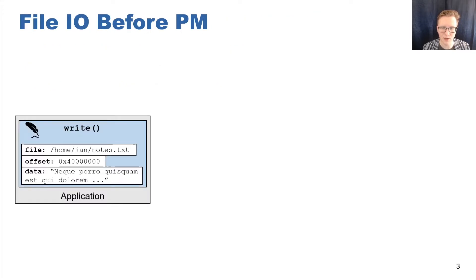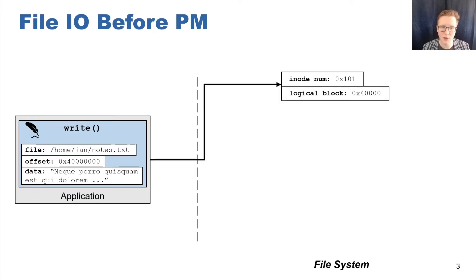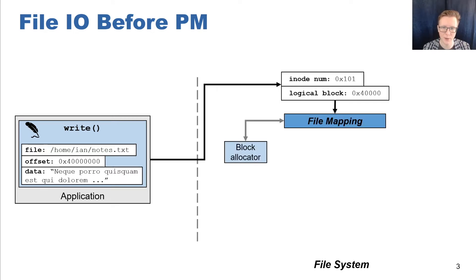Let's consider an example. An application is trying to update a file. In the file system, a file write at a byte offset is translated to a write at a logical block offset. A logical block is an offset in a file measured in blocks instead of bytes, where a block is the granularity at which the file system allocates space to a file — in most cases 4 kilobytes. To find out where on the device the logical block of the file corresponds to, the file system performs the file mapping operation, which uses a file mapping structure to store existing file mappings and to interact with the block allocator.